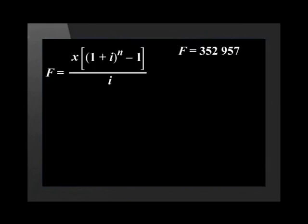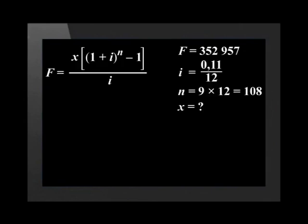Therefore, F equals R352,957, i equals 0.11 divided by 12, and n equals 9 times 12, which equals 108.